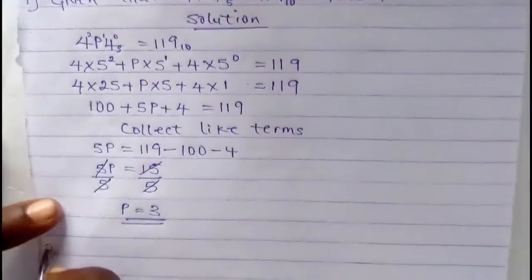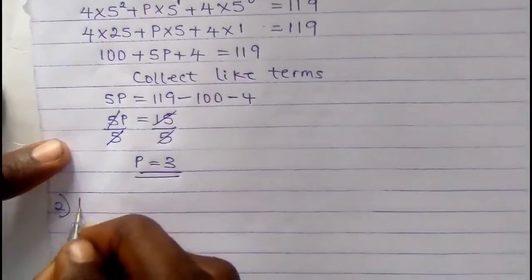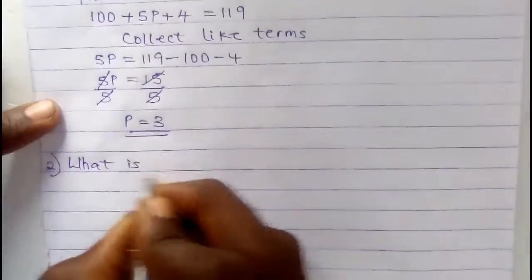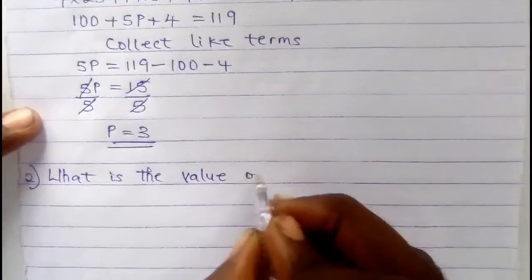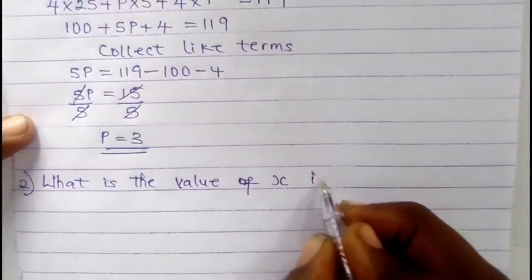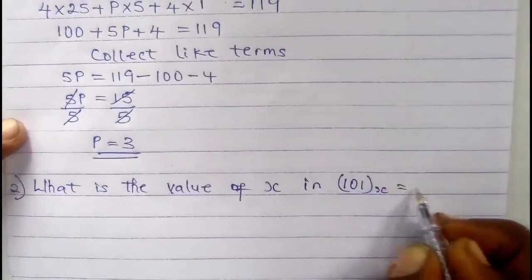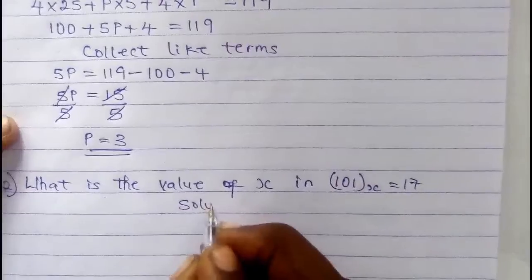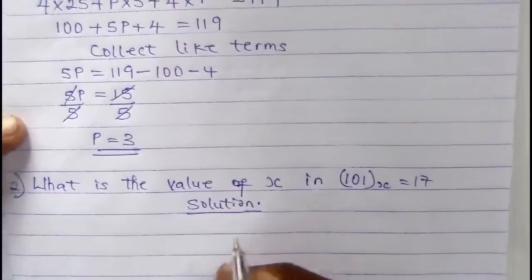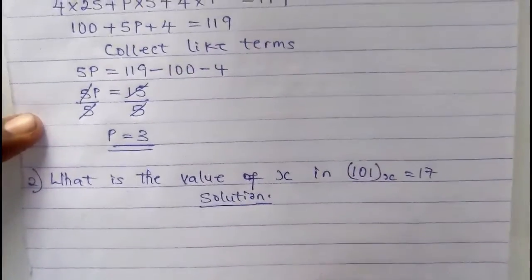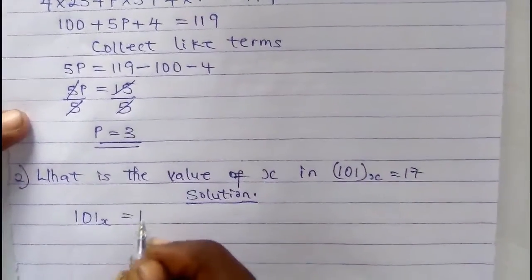Example 2: Find the value of S in 101 to the base of S equals 17. Solution — you might be wondering about this type of number base problem. Most schools will skip these and give you only the simple ones. So: 1, 0, 1 to the base of S equals 17. Remember, this 17 is to the base of 10.